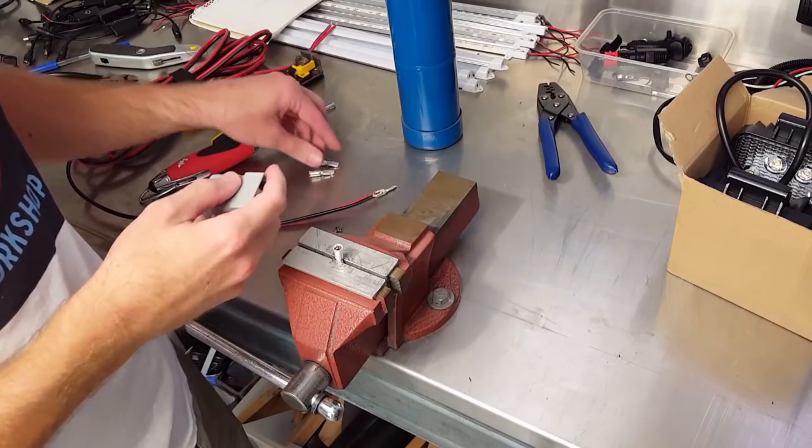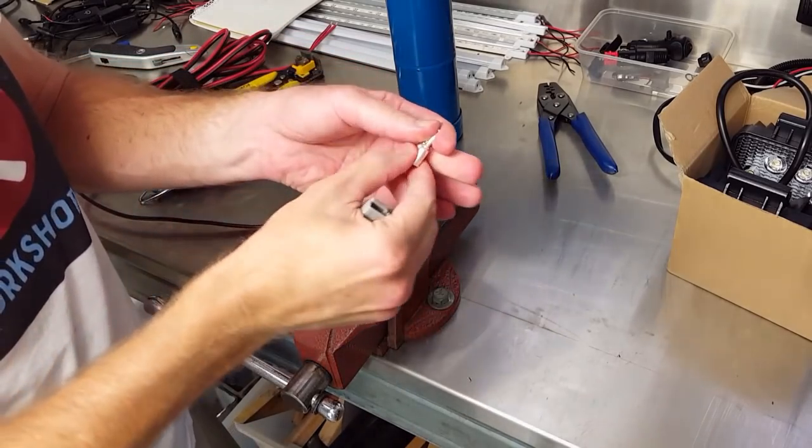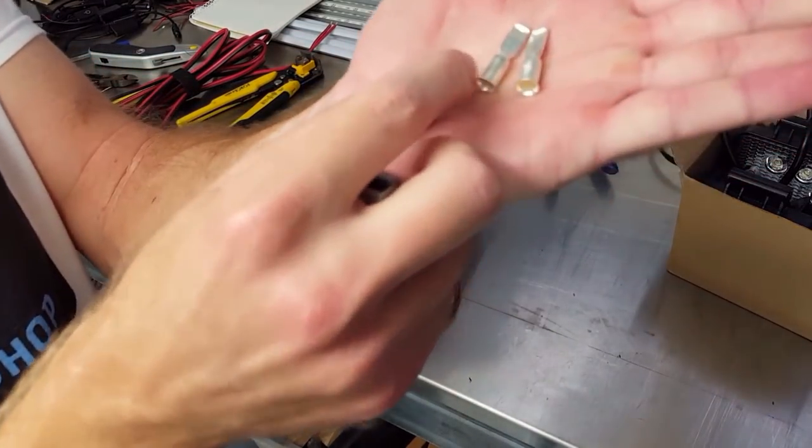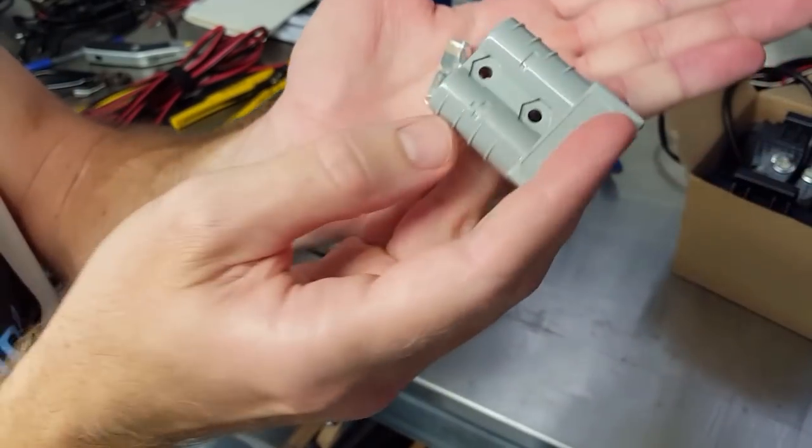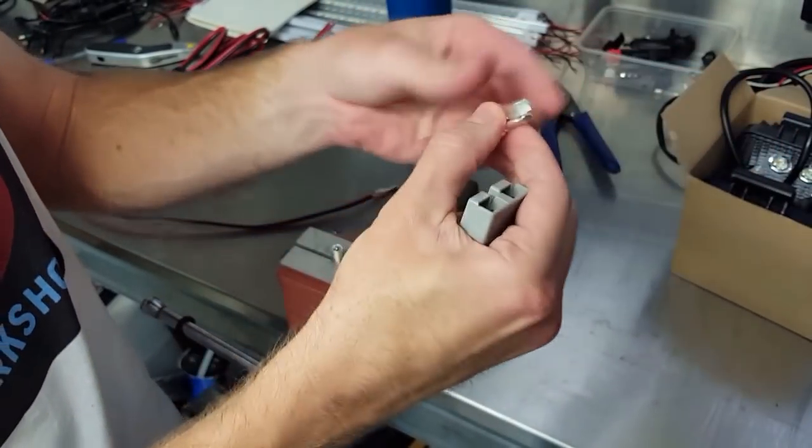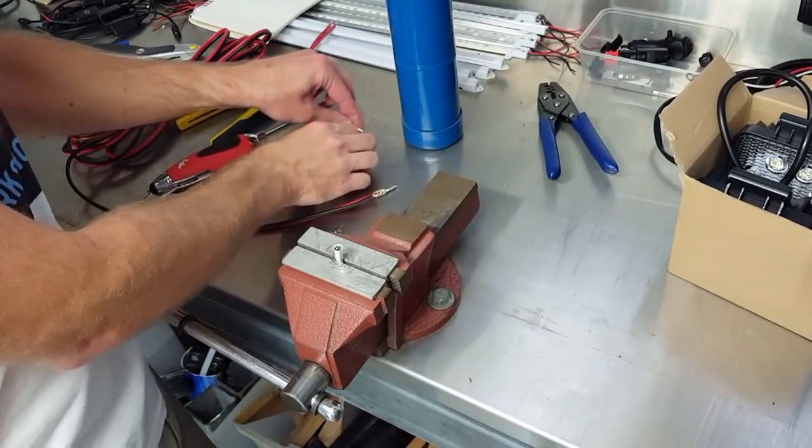So this is how I do my Anderson plug terminals to wire connection. There's the Anderson terminals, there's the plug it goes into. I've tried various crimping techniques and I've gone back to soldering.